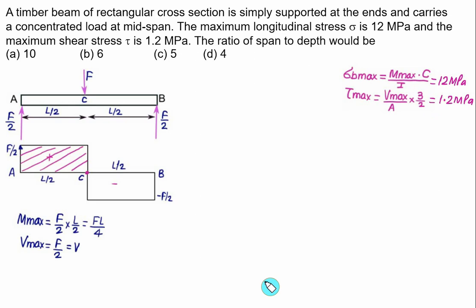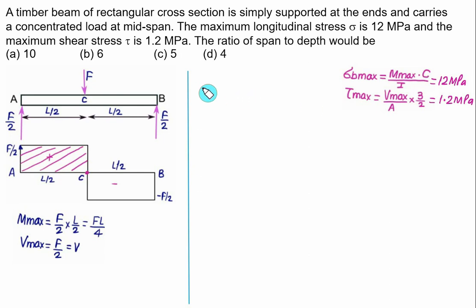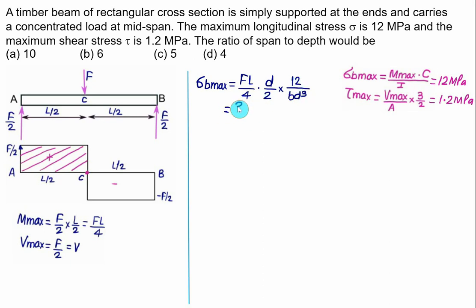With a concentrated load F at the centre, the maximum bending moment is FL/4 and the maximum shear force is F/2. For a rectangular section, C = D/2 and I = BD³/12. So σ_B_max = (FL/4) × (D/2) / (BD³/12) = (3/2) × FL / (BD²), and this equals 12 MPa.